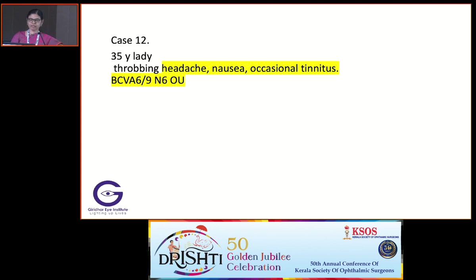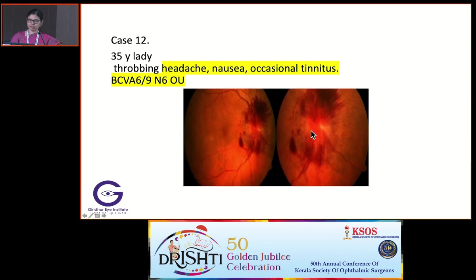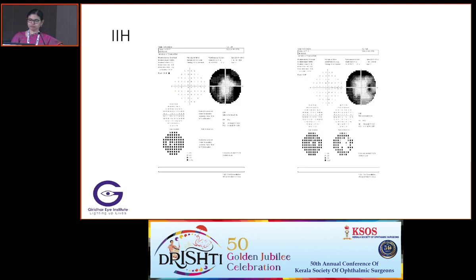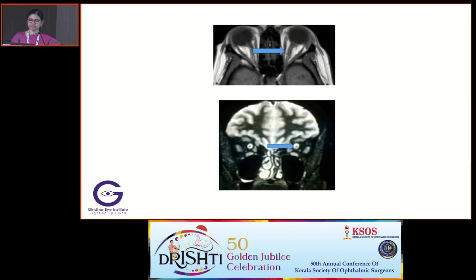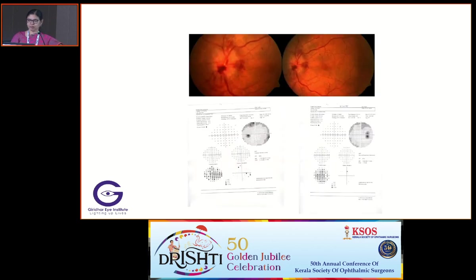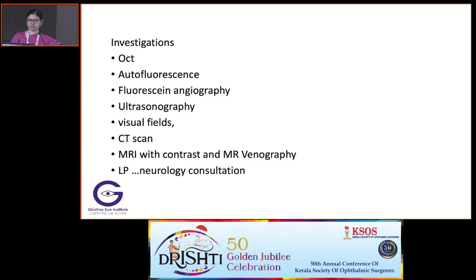A 35-year-old lady with throbbing headache, nausea, tinnitus — vision was okay, with florid disc edema and constricted fields. MRI showed IIH. She underwent VP shunt and the fields improved after that.